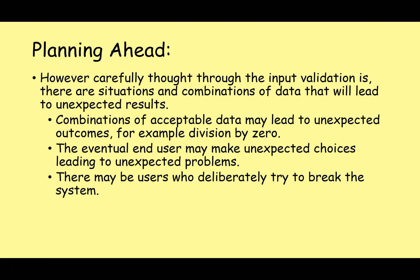However carefully thought through our input validation is, there are situations and combinations of data that could lead to unexpected results. For example, combinations of acceptable data may lead to unexpected outcomes, such as the dreaded division by zero. Or the eventual end user may make unexpected choices, leading to unexpected problems. Users either accidentally or deliberately don't do what we expect them to do, and that can cause problems.